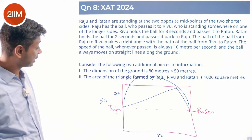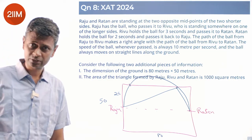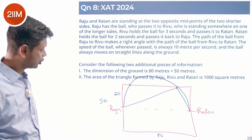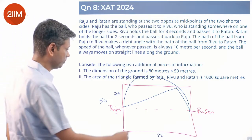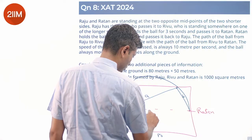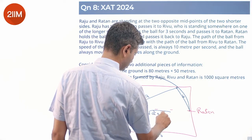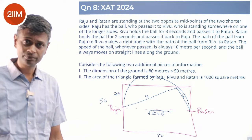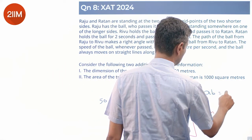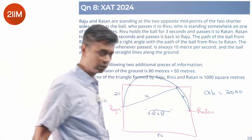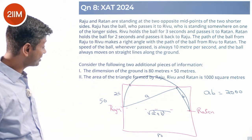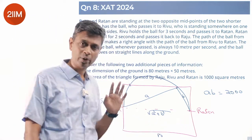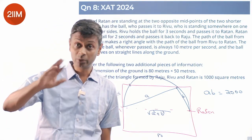The area of the triangle formed by Raju, Rivu, and Ratan is 1000 square meters. Letting the two legs be A and B, the hypotenuse is √(A² + B²), and we know that half times A times B equals 1000, so AB = 2000. What we need to find is A + B + √(A² + B²). Note that (A + B)² = A² + B² + 2AB.